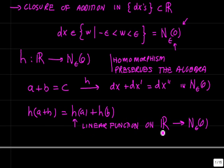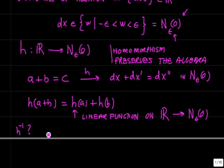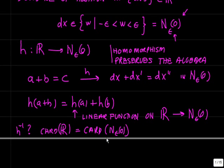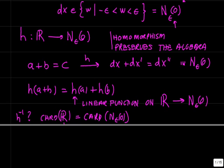So h is a linear function on the reals. We will have established this homomorphism — we have an image of the additive algebra on the real numbers, projected by the function h onto the epsilon neighborhood. What about h-inverse? H-inverse has a good chance of existing because the cardinality of the real numbers is equal to the cardinality of the epsilon neighborhood of 0. That means there are enough points in both sets, R and N-epsilon, to map to each other in a one-to-one fashion. So h-inverse should be findable as well.